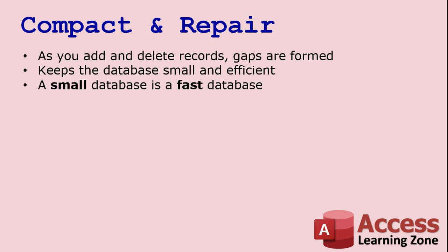This will keep your database nice and small and efficient. A small database is a fast database, both on your computer if you're the only one using it and if it's on a network. If you've got to go over a network, Access has to transmit all that data back and forth. Big files mean slow load times. Access can also accumulate some junk over time. If you don't compact the database regularly, you'll notice it just slowly gets bigger — index files and temporary objects that Access doesn't always clean up automatically.